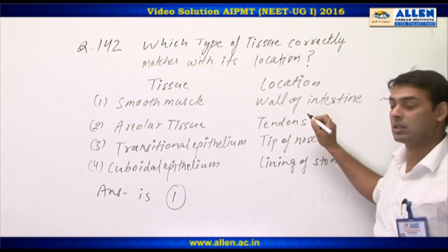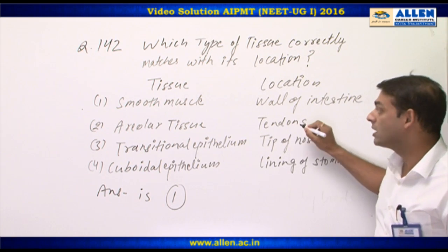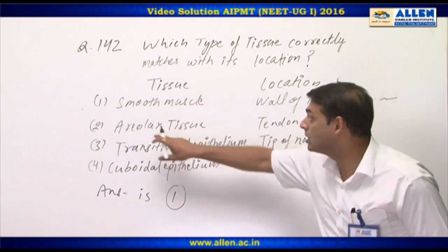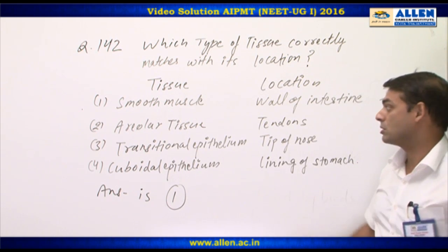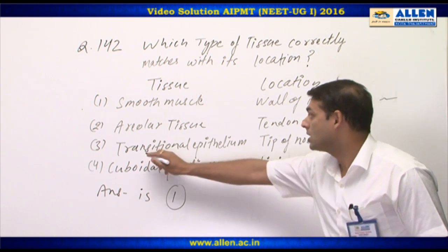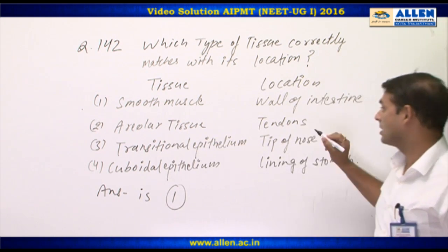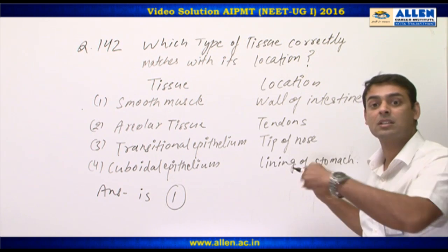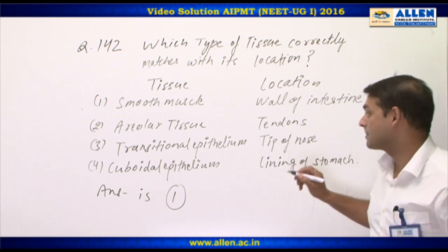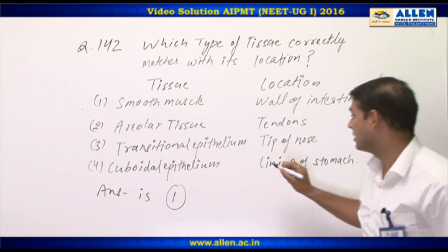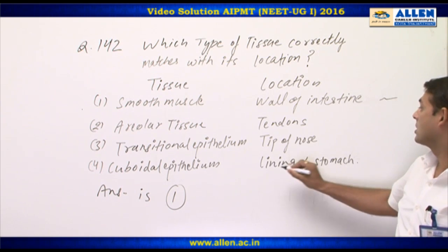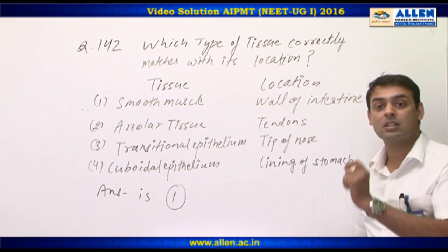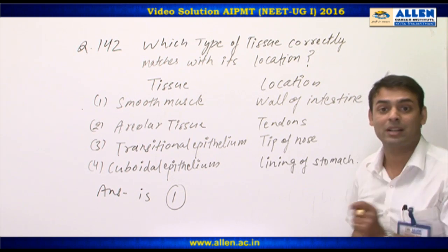Second option, areolar tissue at tendon — no. Tendon is a dense connective tissue, while areolar is a type of loose connective tissue. Third option, transitional epithelium at tips of nose — no; tips of nose consist of cartilage. Fourth option, cuboidal epithelium lining the stomach — no; lining of the stomach consists of columnar epithelium.